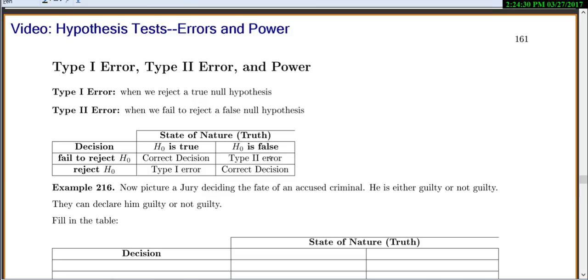If our null is false and we fail to reject it, that's a type 2 error. But if our null is false and we reject it, that's a correct decision. There are two ways we can make correct decisions and two ways we can make errors.